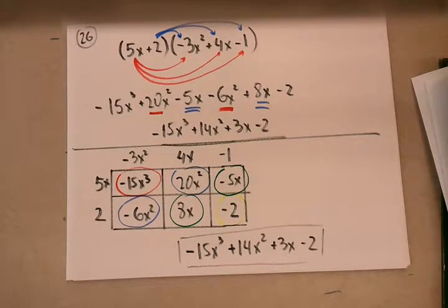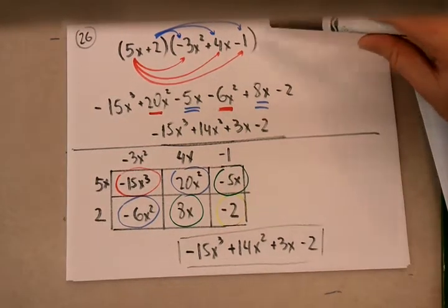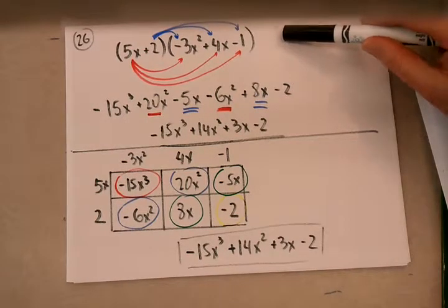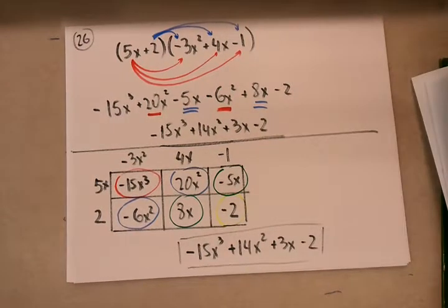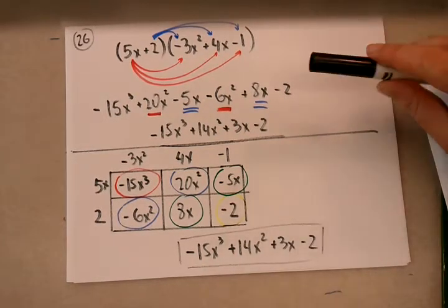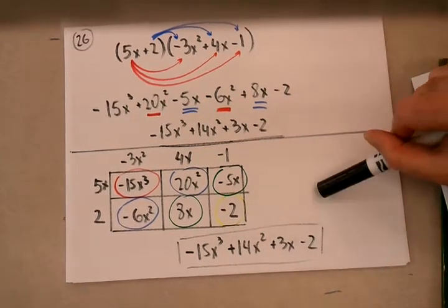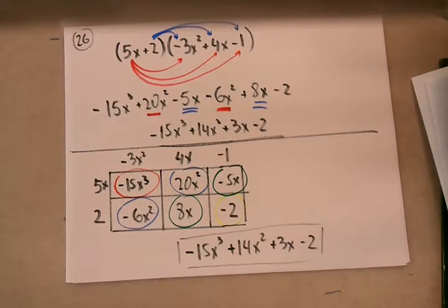On the quiz or test, I don't care which method you use. If you want to use the distribution method — also known as the clamshell method or the vertical and horizontal method — or the table method, it doesn't make a difference. Whatever makes sense to you, whatever is easier for you. If you have any questions, we'll talk about it in class. Thank you.